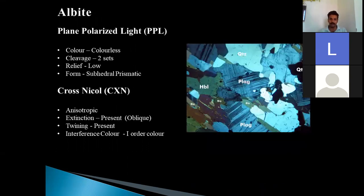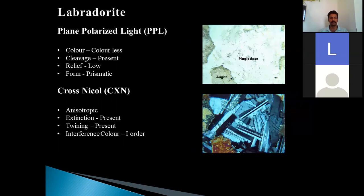Then the albite, it is the first member of plagioclase series where the grains are colorless. Two sets are visible. Subhedral forms are there. Oblique extinction is present. And of course first order color are visible. Then the labradorite where the colorless crystals or colorless minerals with low relief and prismatic habits are there. It is anisotropic and extinction is present. And twinning is also prominently present in it. The interference color is of first order.